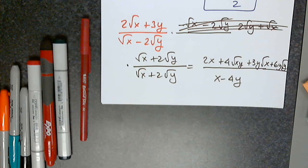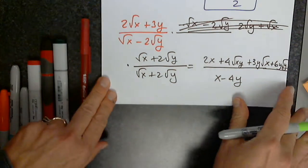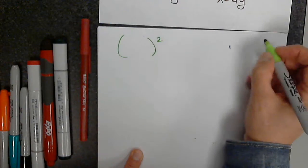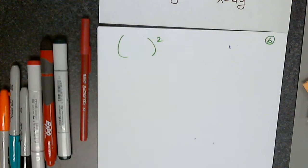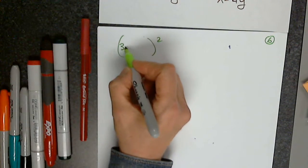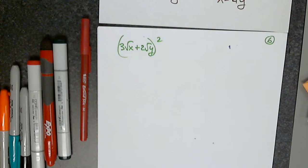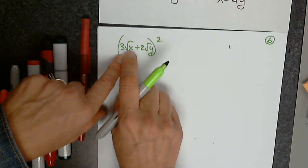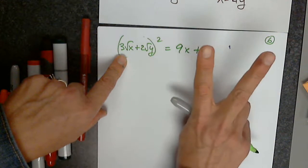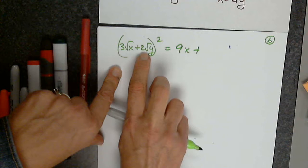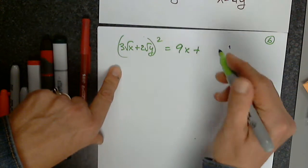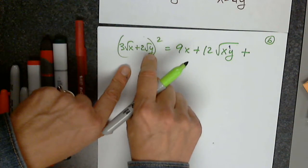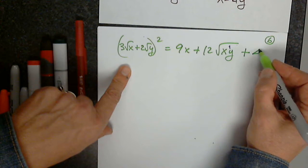9d. In 9d, we have to square a two-term expression — it's a binomial squared. How many terms do I have to write? Three. The first term squared: I have to square 3 and square the square root of x — that gives 9x. Then 2 from the formula times 3 times 2 gives 12 times the square root of xy. Plus the second term squared: I square 2 and square the square root of y — that gives 4y.